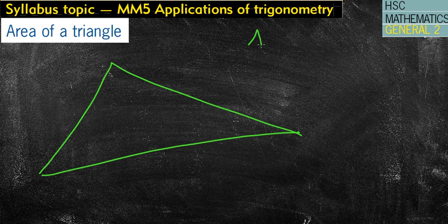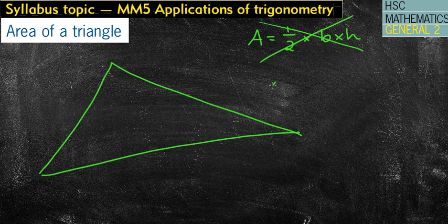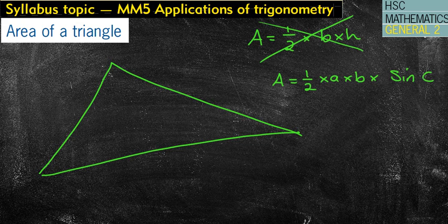Now we know that for a right-angled triangle, or where we have the perpendicular height, it's half times the base times the height. Unfortunately, for a non-right-angled triangle, we can't use that. So we use this formula: half times A times B times sine C. I'm not going to bother showing you where the formula comes from. We're just going to use that rule because we're given that in our formula sheet.